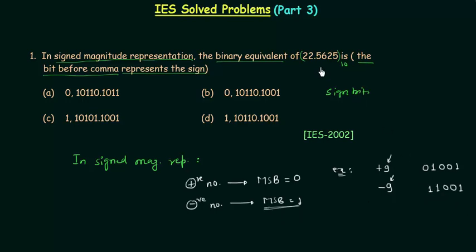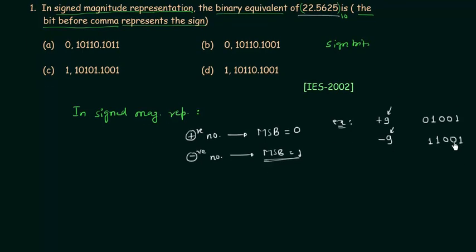Now we will move to the number given in the problem: 22.5625. The first thing is to convert this number to binary. If you look at this number you will find it has two parts — the integer part and the fractional part — and in order to convert it to binary we have to deal with them separately.